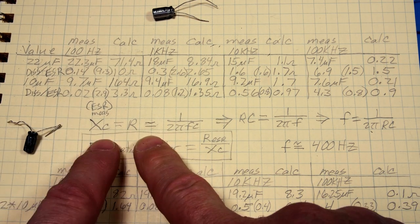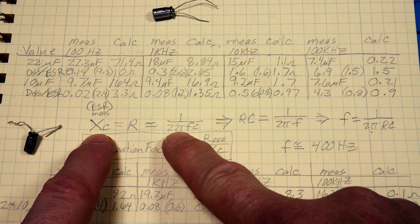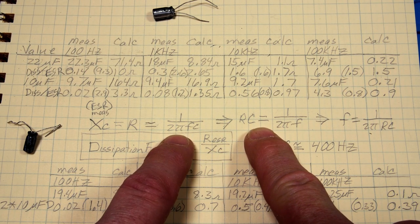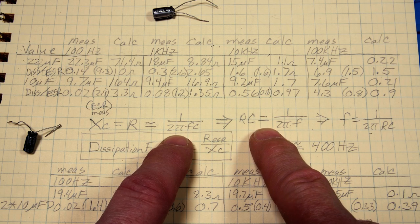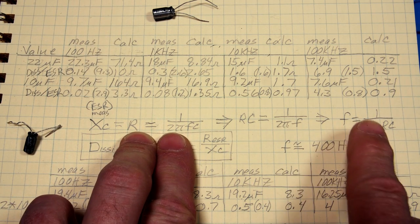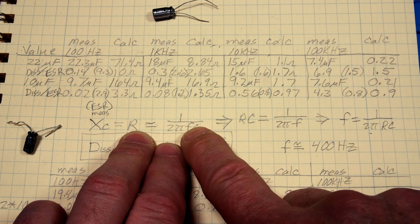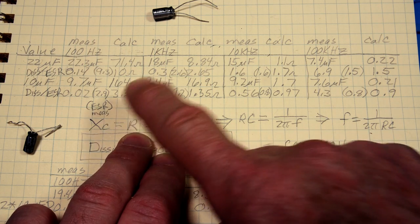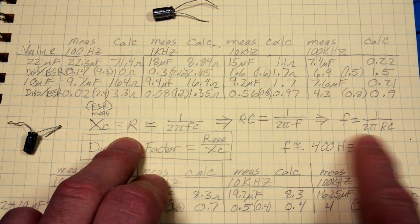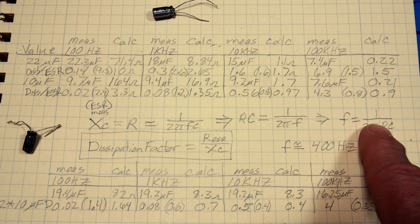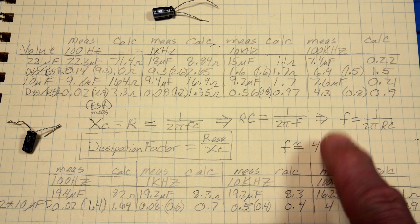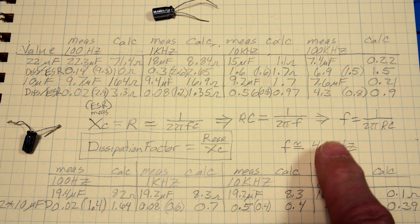The break point occurs when XC equals R, which equals 1/(2πFC). The RC time constant comes from that relationship. What we really want is to solve for F — cross multiply to get F up top, then divide both sides by R. That gives us the break point formula: F = 1/(2πRC). It works out to about 398 Hz — I rounded it to 400 Hz to make the graphing easy.